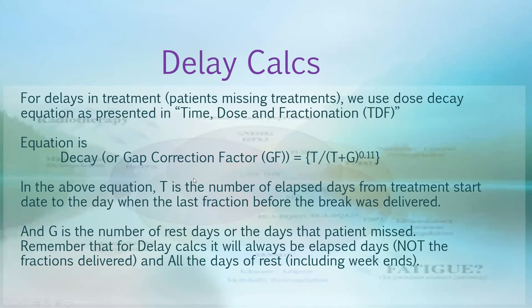The equation for delay calculation is t divided by (t + g) to the power of 0.11. Here t is the number of elapsed days — days that include weekends when the patient does not receive treatment. For example, if a patient starts Monday and gets five days of treatment, then is off Saturday and Sunday, the elapsed days are seven.